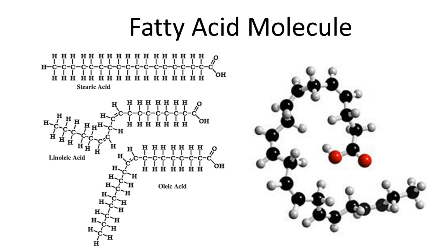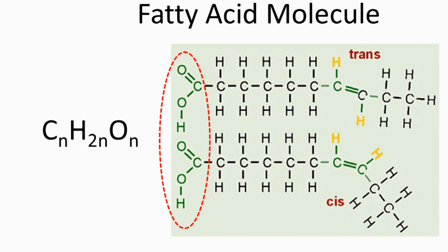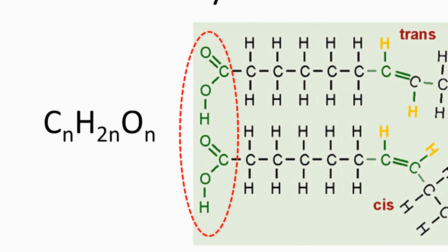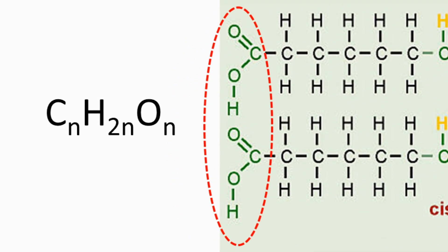The next molecule models we will construct are fatty acids. Fatty acids are part of triglycerides — fats and oils. In nature, they are made up of a chain consisting of an even number of carbon atoms from four to twenty-eight. Fatty acids have a carboxyl group, COOH, at one end. It is this end that combines with the hydrogen-oxygen group on a glycerol molecule to form triglycerides.